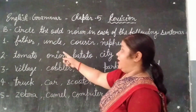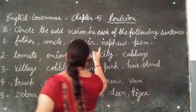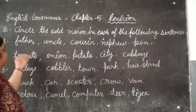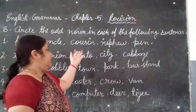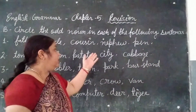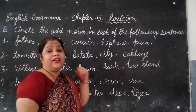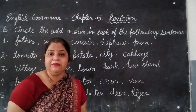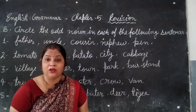First question: father, uncle, cousin, nephew, pen. All of these — father, uncle, cousin, niece — are family members. But pen is the odd one out. So pen is the most different here. You have to circle pen.